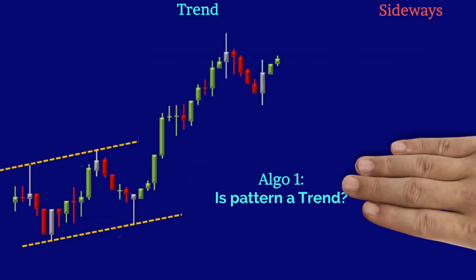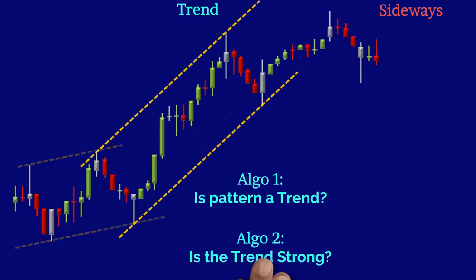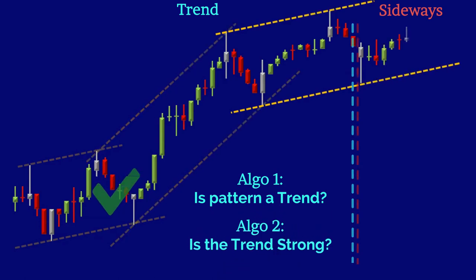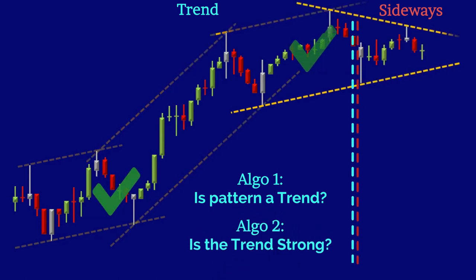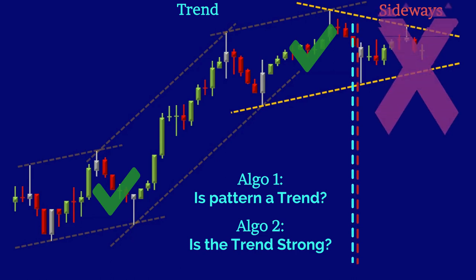The first two algorithms train you to recognize early when a trend is forming and when it is at a late stage and has lost its momentum, so you can only trade the trending patterns and not sideways.